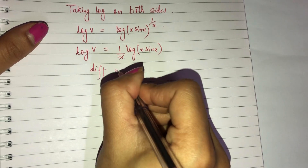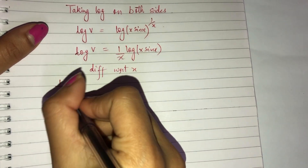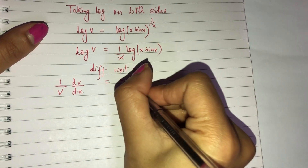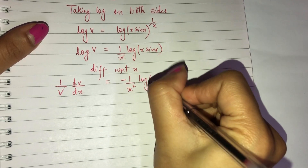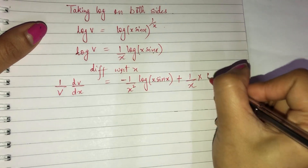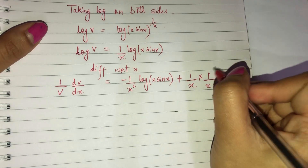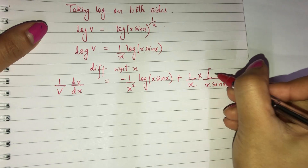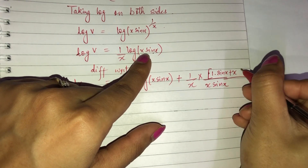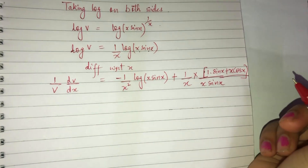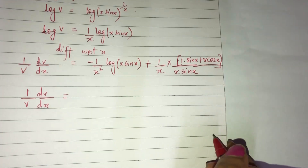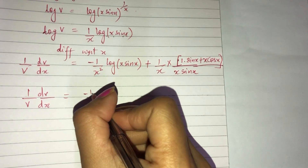Differentiate with respect to x: (1/v)·dv/dx = [−1/x²]·log(x·sin x) + (1/x)·[differentiation of log(x·sin x)]. The differentiation of log(x·sin x) gives (1/x)·sin x + x·cos x using the product rule — that is, x·1·sin x + x·cos x.